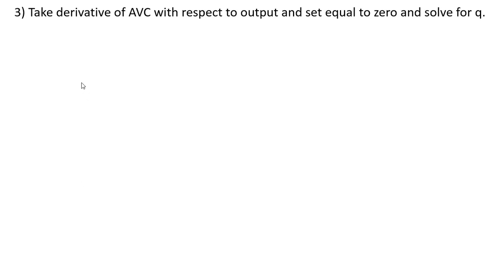The next step is to take the derivative of average variable cost with respect to output and set the derivative equal to zero. And once we do that, we'll solve for Q.